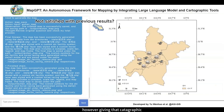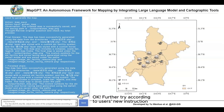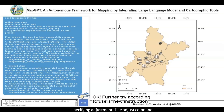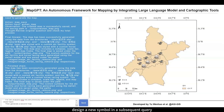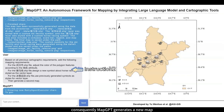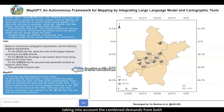However, given that cartographic mapping is inherently subjective, the generated result by MapGPT may not entirely align with user preference. As a solution, users have the option to instruct MapGPT to revise or fine-tune the result, specifying adjustments like adjusting the color and designing a new symbol in a subsequent query. Consequently, MapGPT generates a new map taking into account the combined demands from both queries.